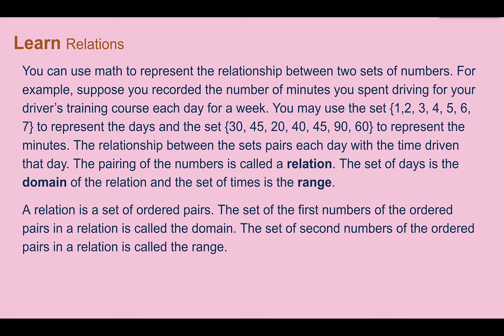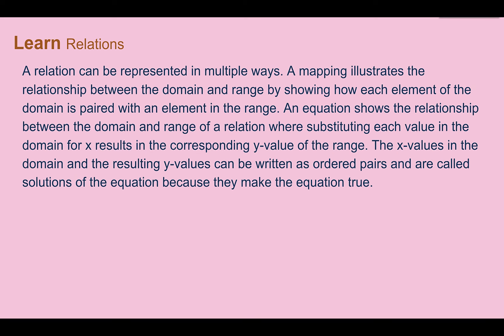We'll focus more on domain and range a little bit later. So a relation is just a set of ordered pairs. The first set of numbers in the ordered pair is the domain. The second set of numbers in that ordered pair is called the range.